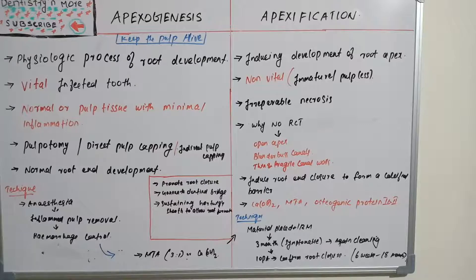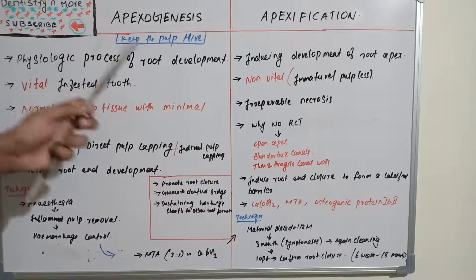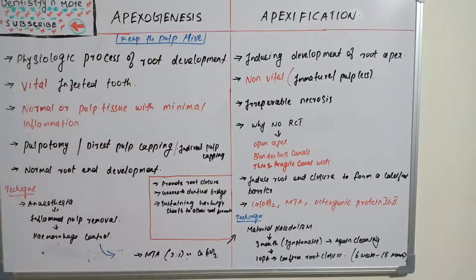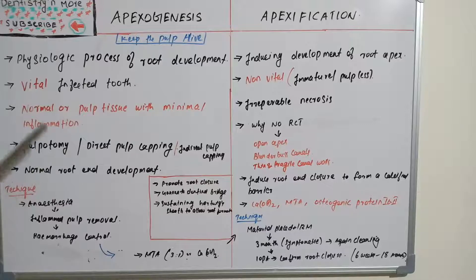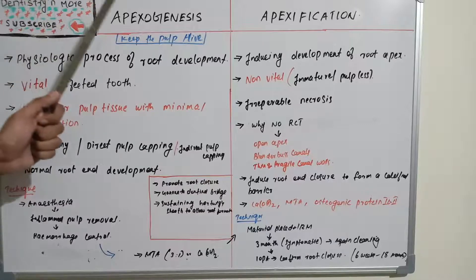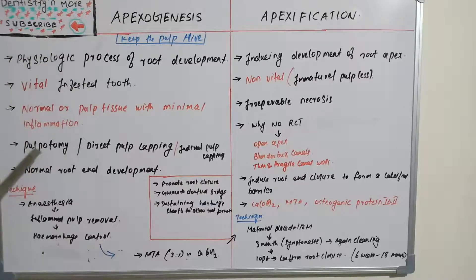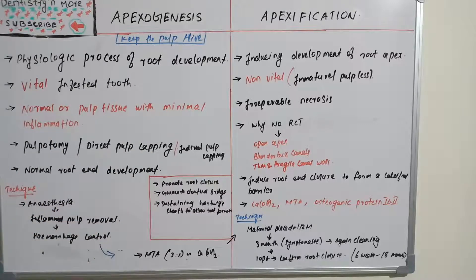Apexogenesis or apexification is done when the pulp is infected — due to caries or any other cause. For apexogenesis, there should be a vital pulp that is normal or pulp tissue with minimal inflammation. That minimal inflammation is the key point; if there is very minimal inflammation, we can go for apexogenesis.